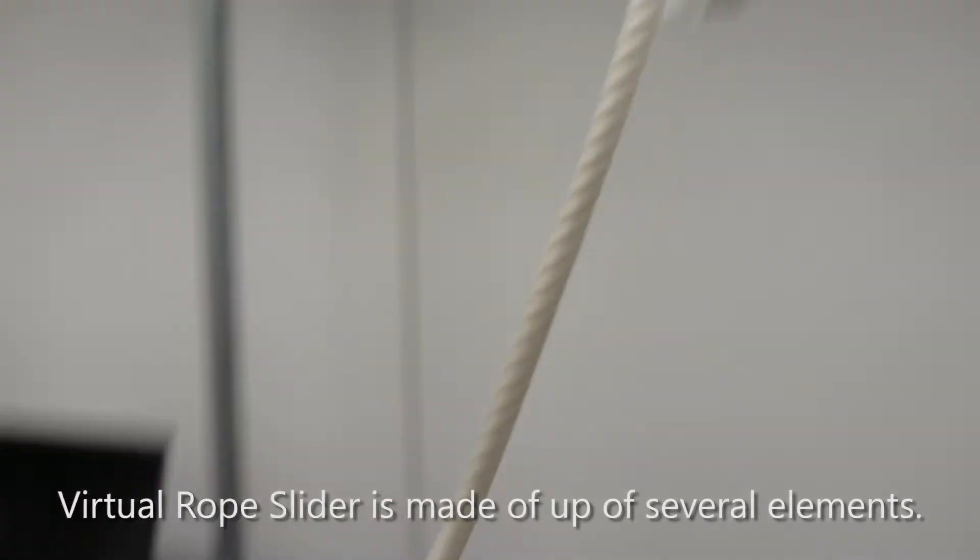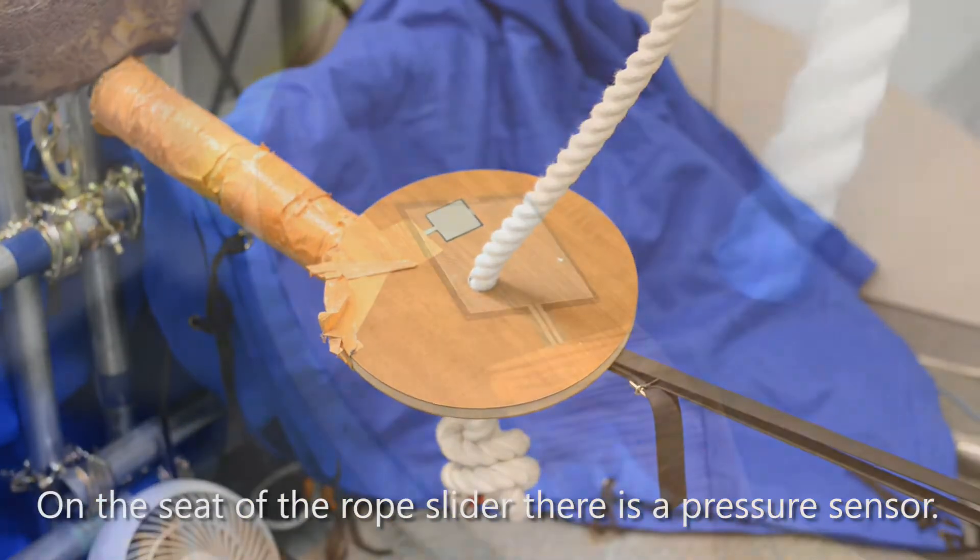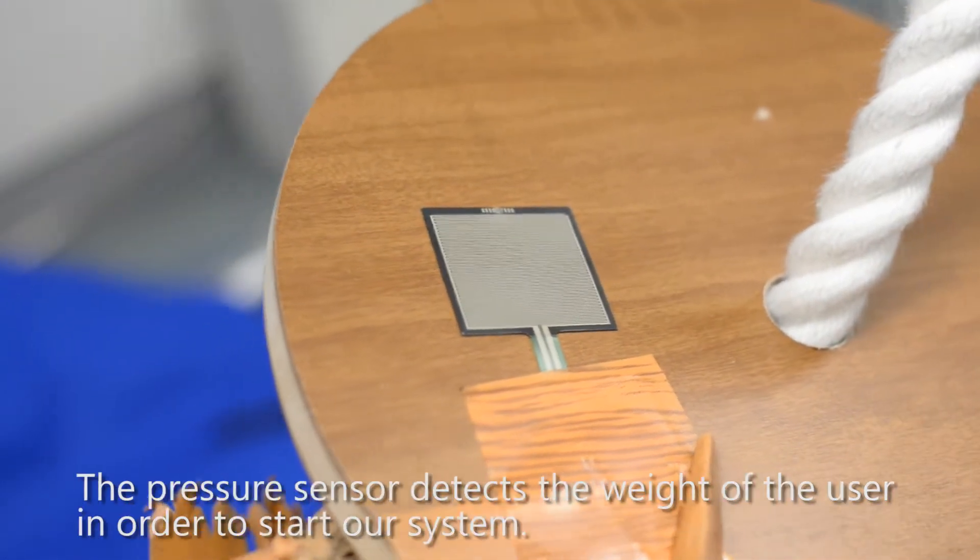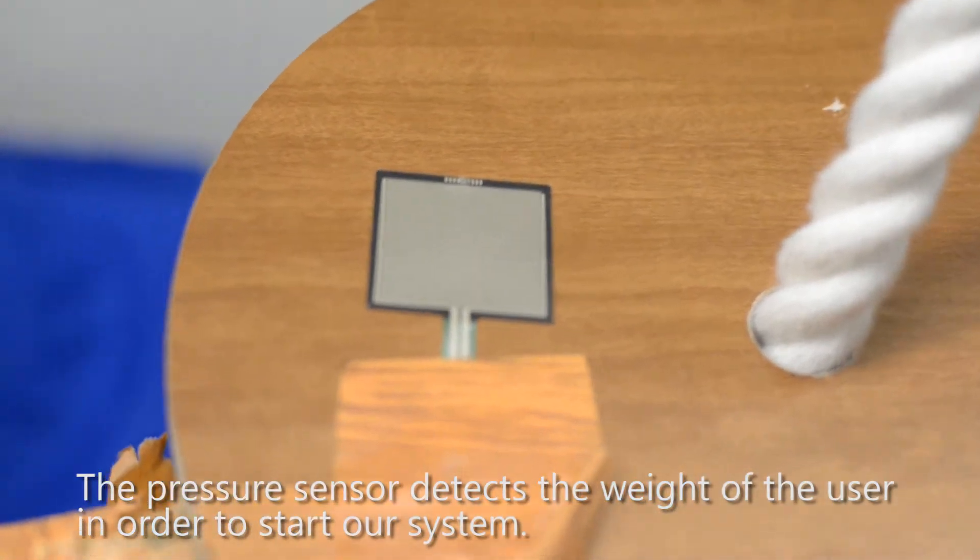Virtual Rope Slider is made up of several elements. On the seat of the rope slider, there is a pressure sensor that detects the weight of the user in order to start our system.